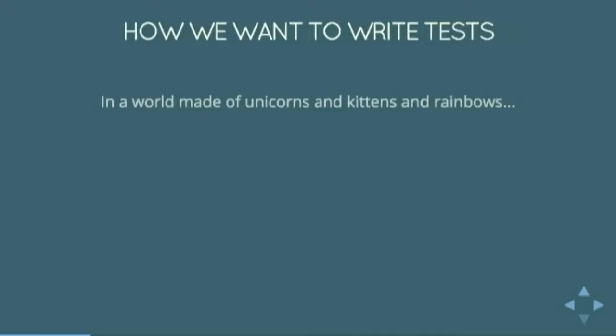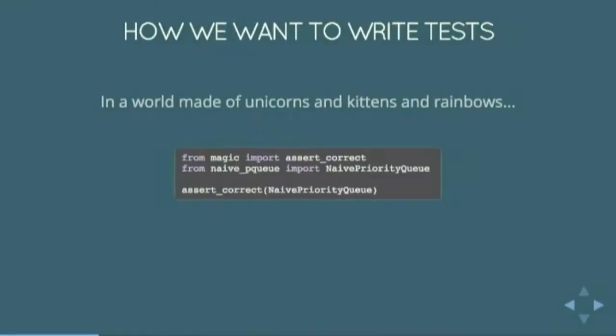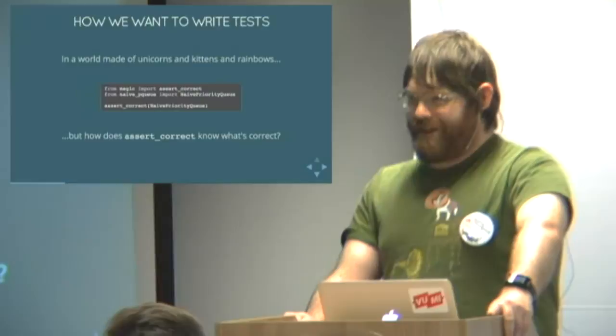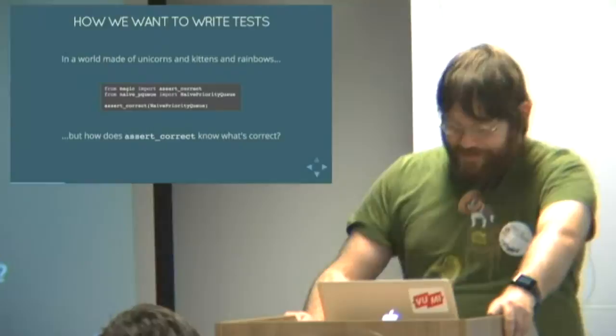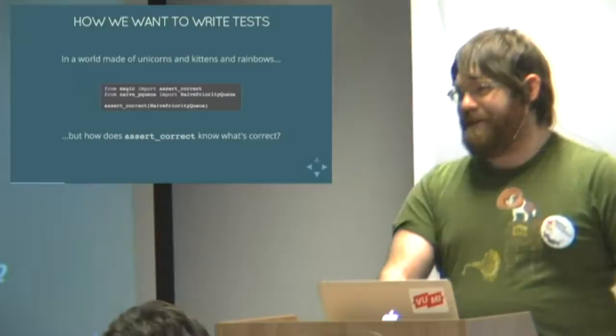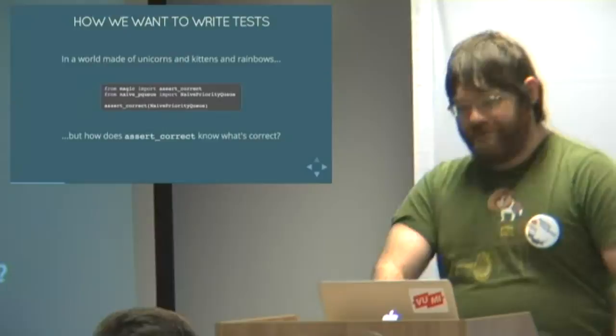So given that example-based tests aren't the best thing in the world, how do we want to write tests? In a world made of unicorns and kittens and rainbows where everything is perfect, we can just do that. From magic import assert_correct, give your code to assert_correct and it tells you what your bugs are and how to fix them. But how does assert_correct know what the correct behavior is? So a big part of testing is determining what is correct and then encoding that in some way.